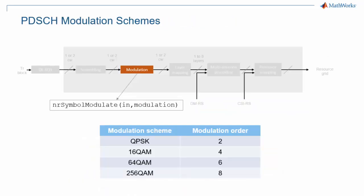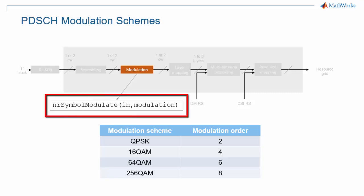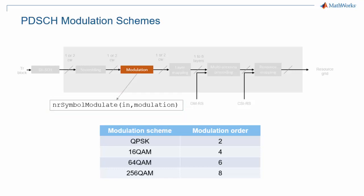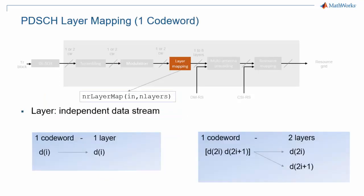5G NR uses the exact same list of modulations on the downlink as LTE, from QPSK through 256QAM. The NRSymbolModulate function implements modulation for 5G NR in one simple call. Layer mapping is the operation that maps one or two codewords to up to eight layers. This operation is somewhat simplified compared to LTE. In 5G NR, anything up to four layers uses a single codeword.